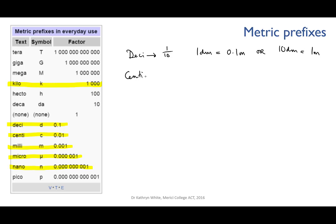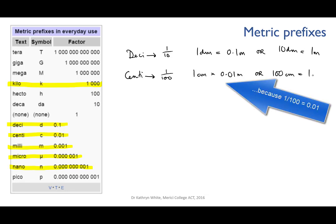Centi means one one-hundredth. One centimetre is equivalent to 0.01 metres. Or we can say that a hundred centimetres are in a metre.